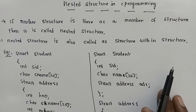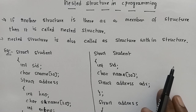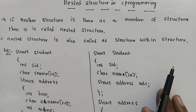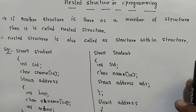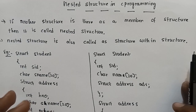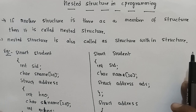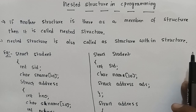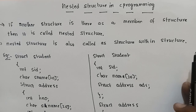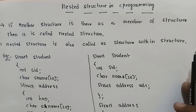Next, we will discuss nested structure. The definition is simple: if one structure contains another structure as a member, then it is called a nested structure.